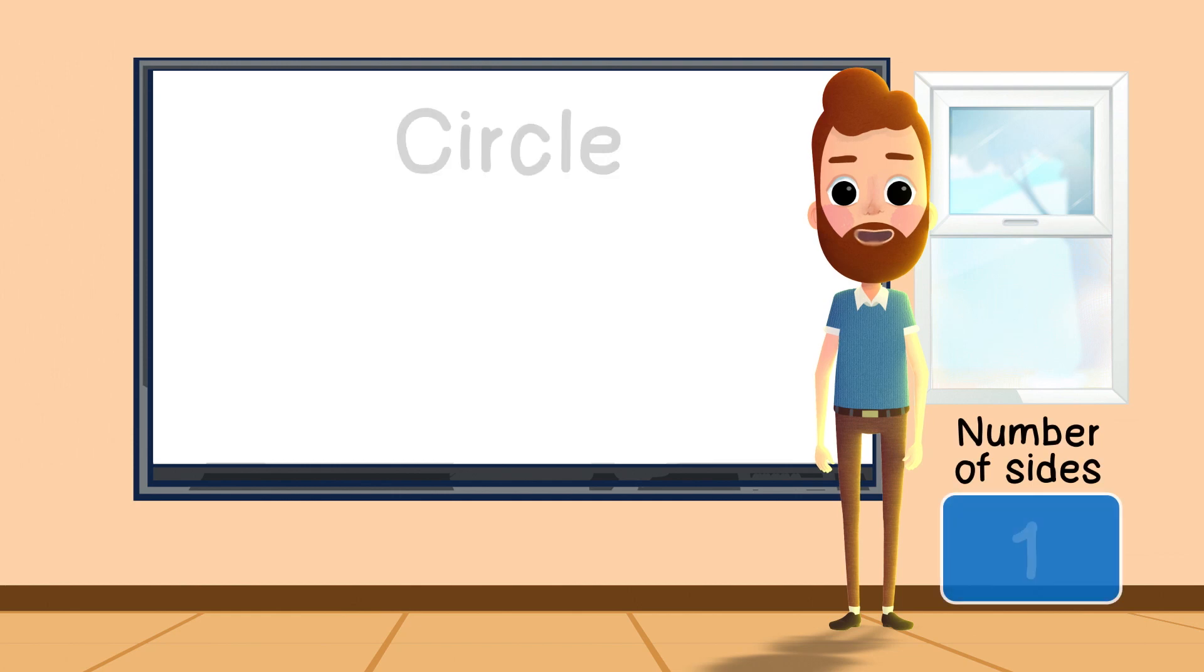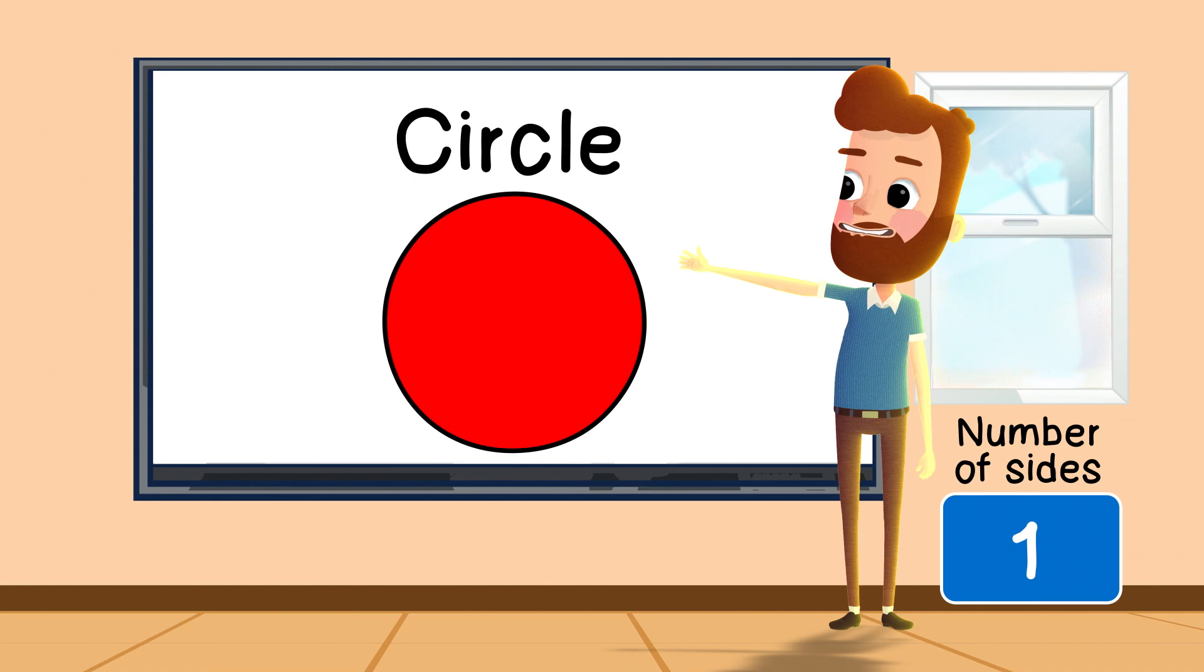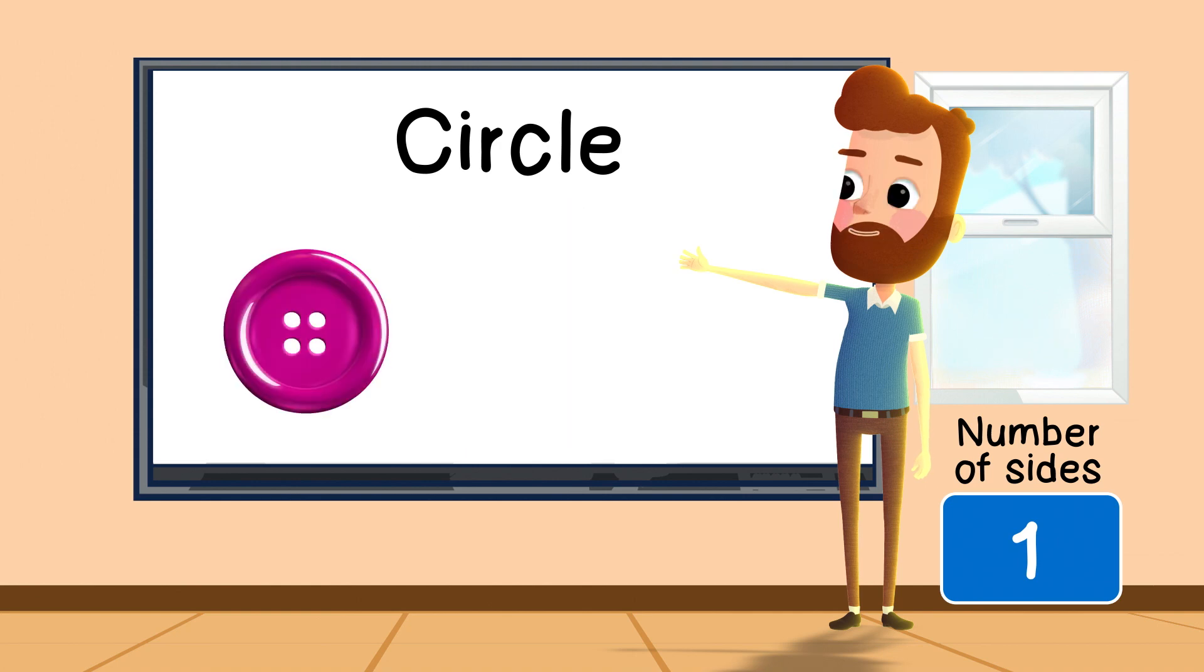Our first shape is a circle. It's a one-sided shape. An example of a circle is a button, the sun, and a ball.